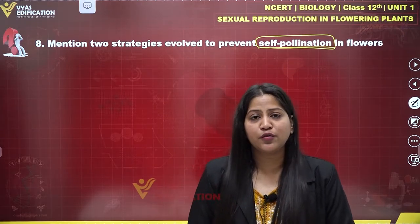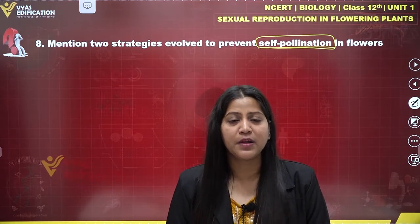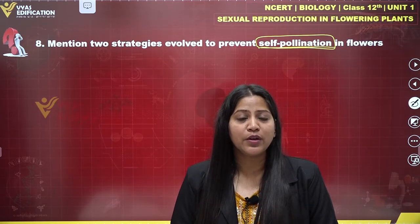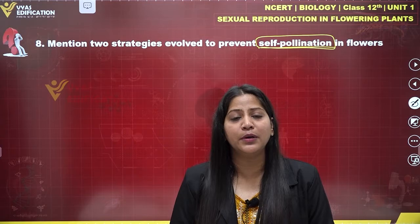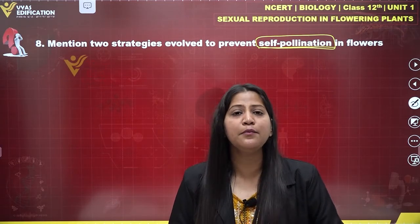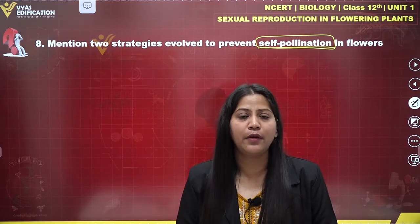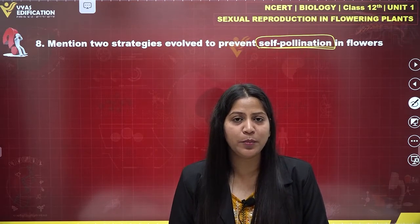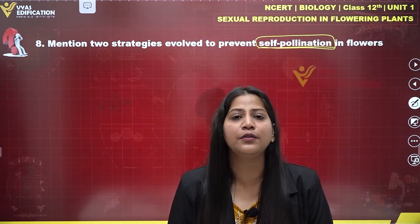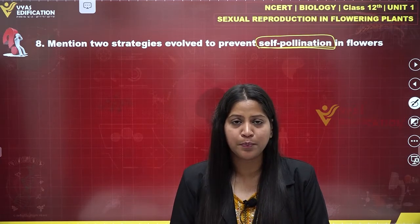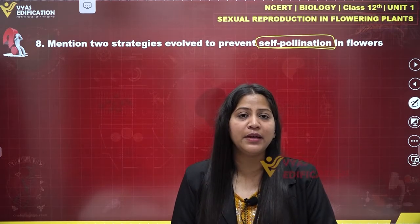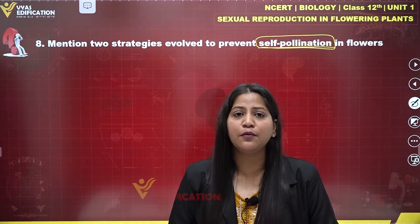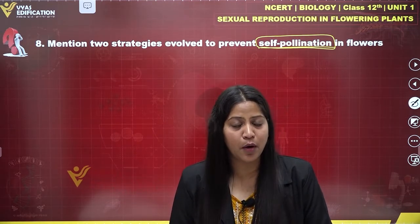Self-incompatibility is a condition in which the pollen is ineffective at fertilizing the same flower or another flower on the same plant, due to inhibition of growth of the pollen tube in the stigma and style of the female reproductive organ, which prevents the delivery of male gametes to the ovule.